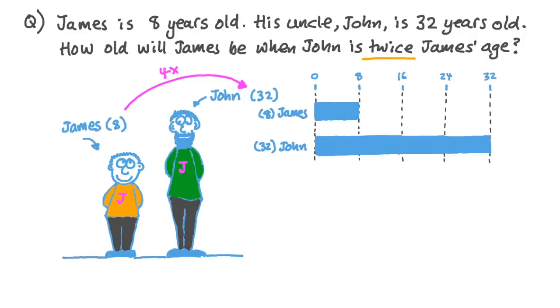OK, so maybe that picture wasn't terribly helpful, but if we represent their ages using bars on a consistent scale, James is eight and John is 32, and the difference in their ages is 32 minus eight, which is 24. And the difference in their ages will always be 24 years, because each year that James gets one year older, John will also get one year older. For example, in a year's time, James will be nine and John will be 33. The difference will still be 24.